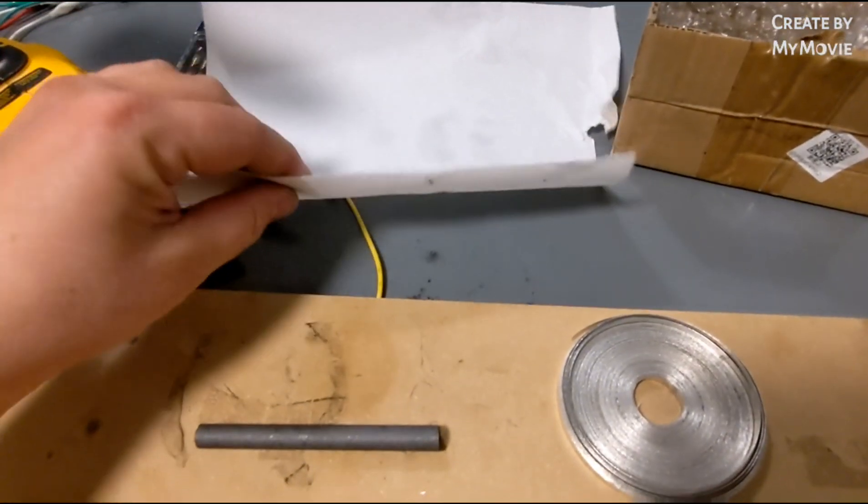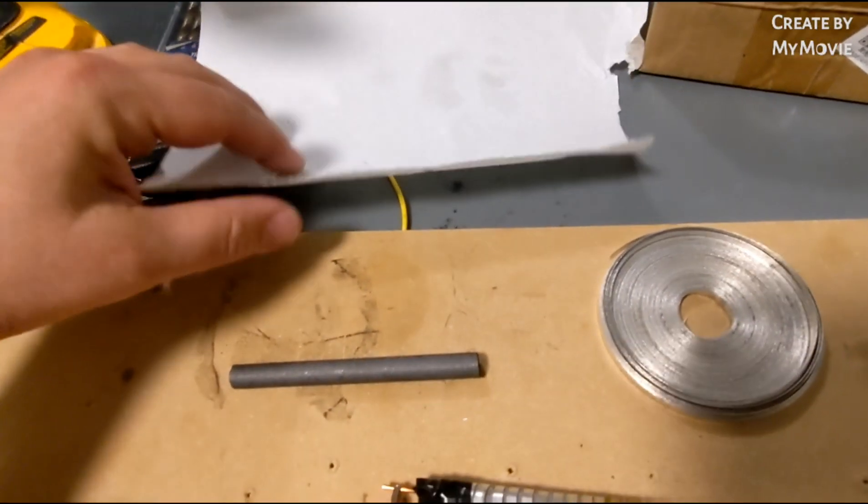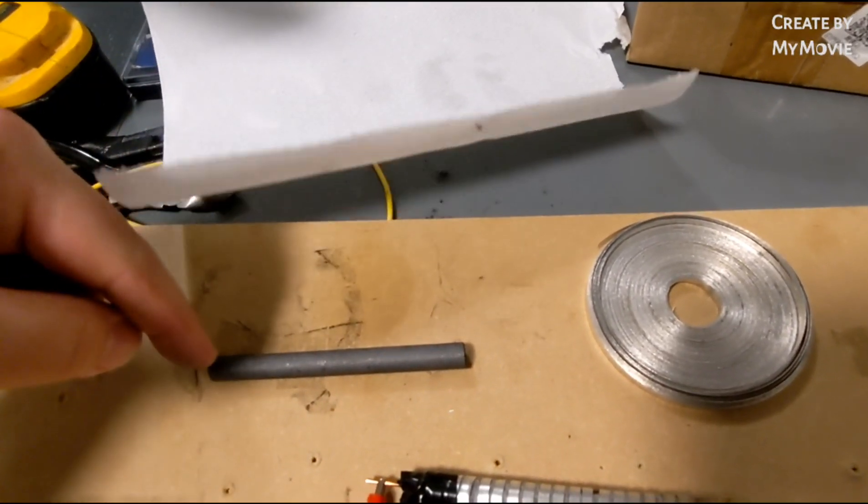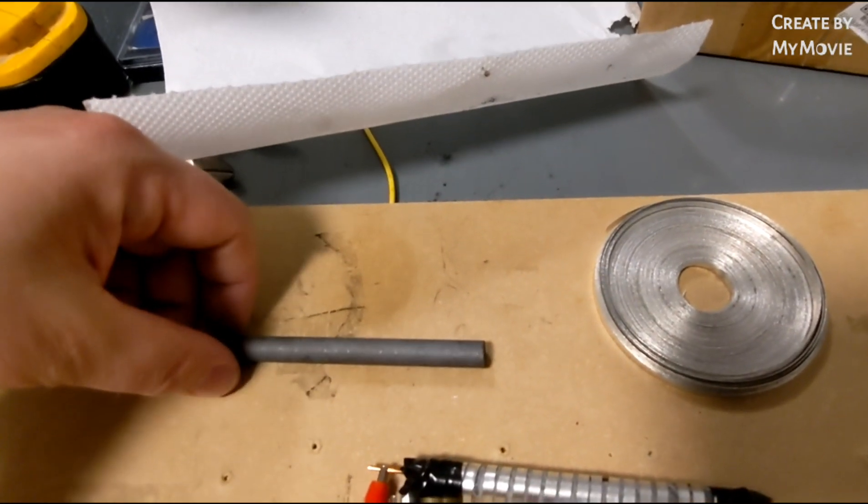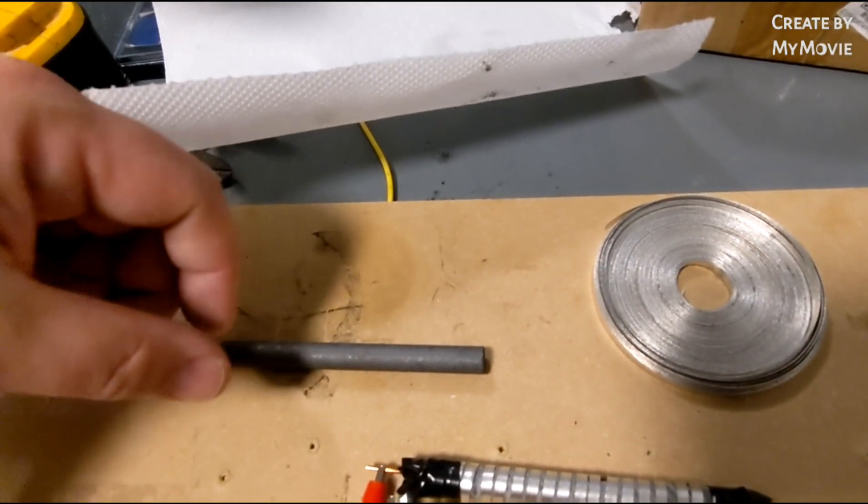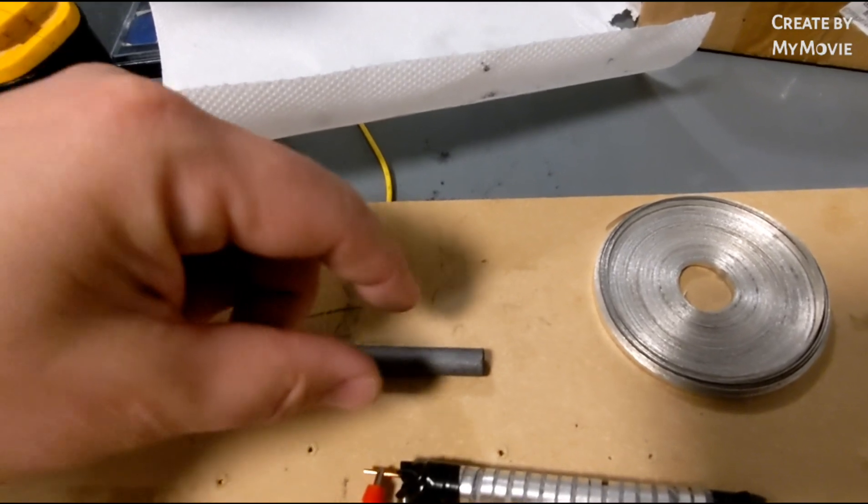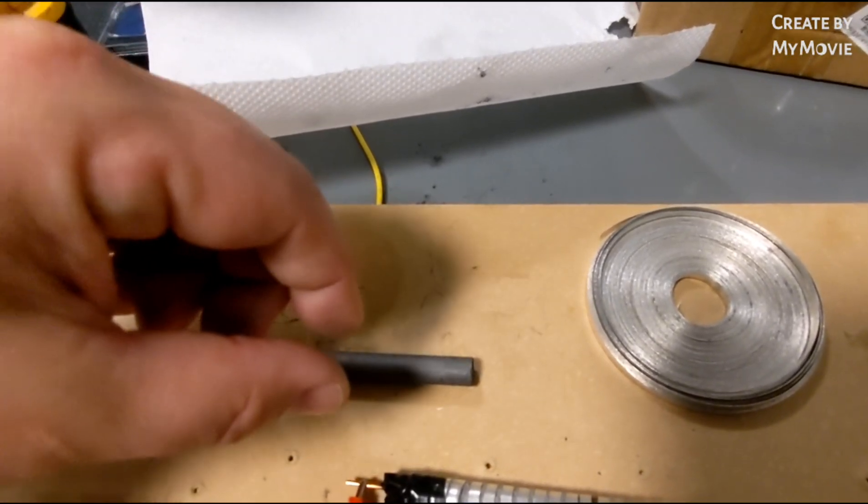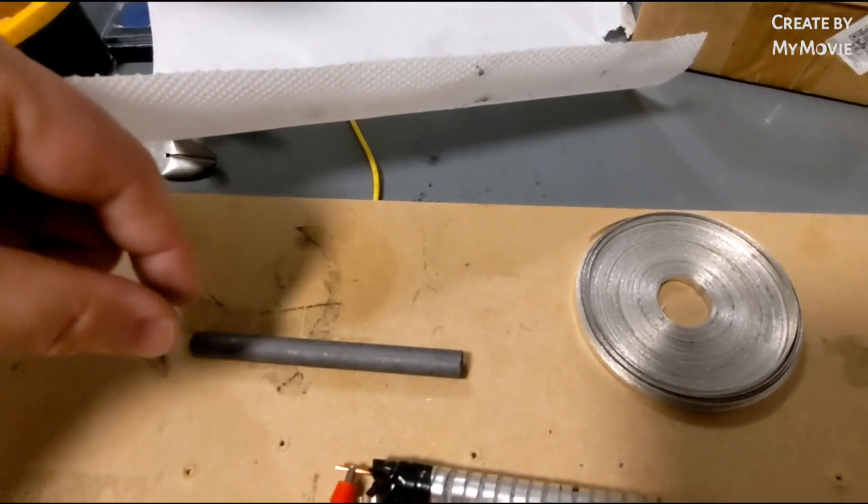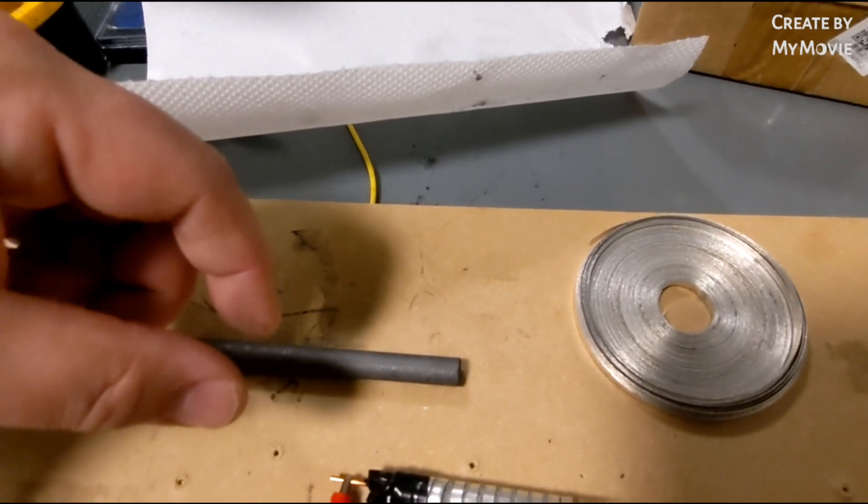And then the last piece you're going to need for this build is paper towel. So what you're going to do is you're going to wrap one layer of paper towel around this rod. You're going to tape off the end so it's nice and secure, no wrinkles, nothing. Make it very smooth, tape it off so it's not going to move and it's not going to unravel.